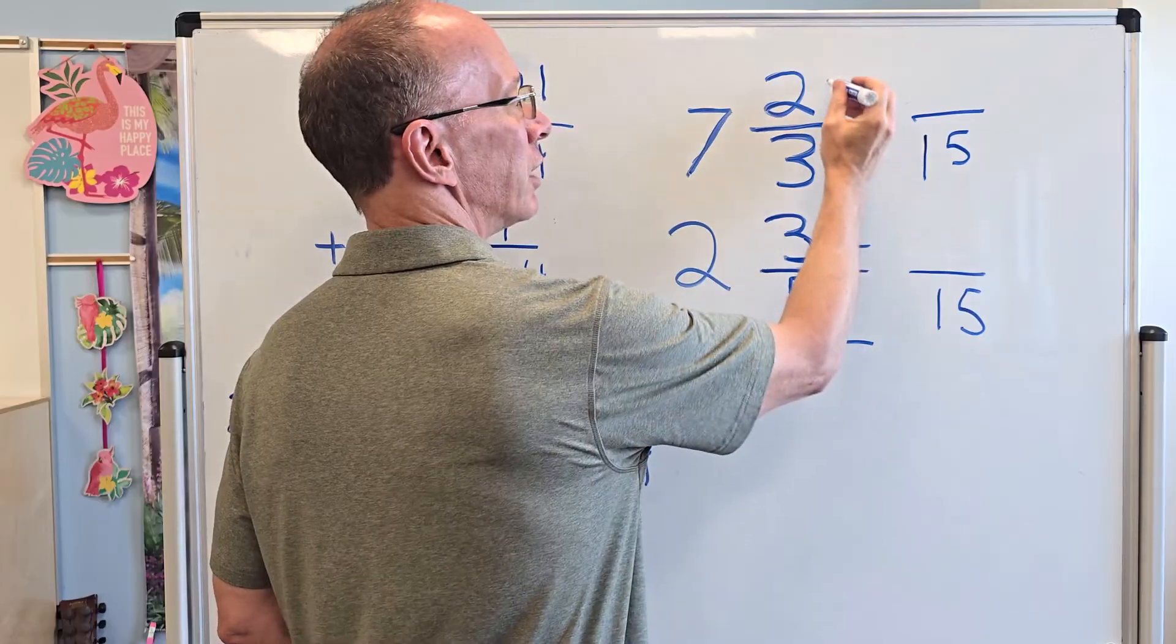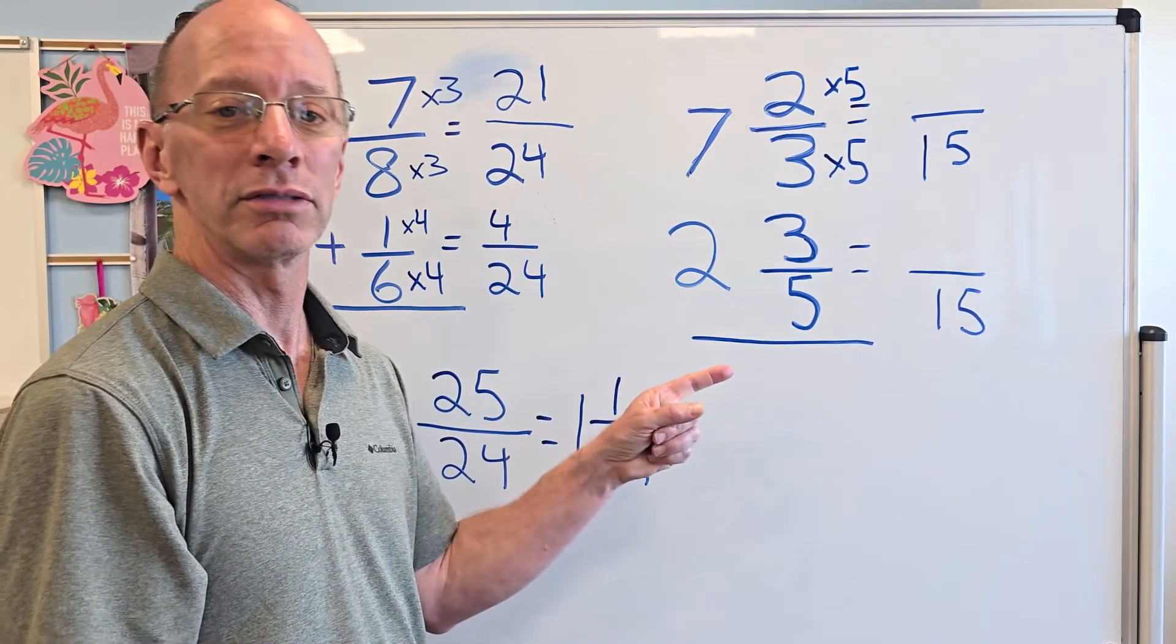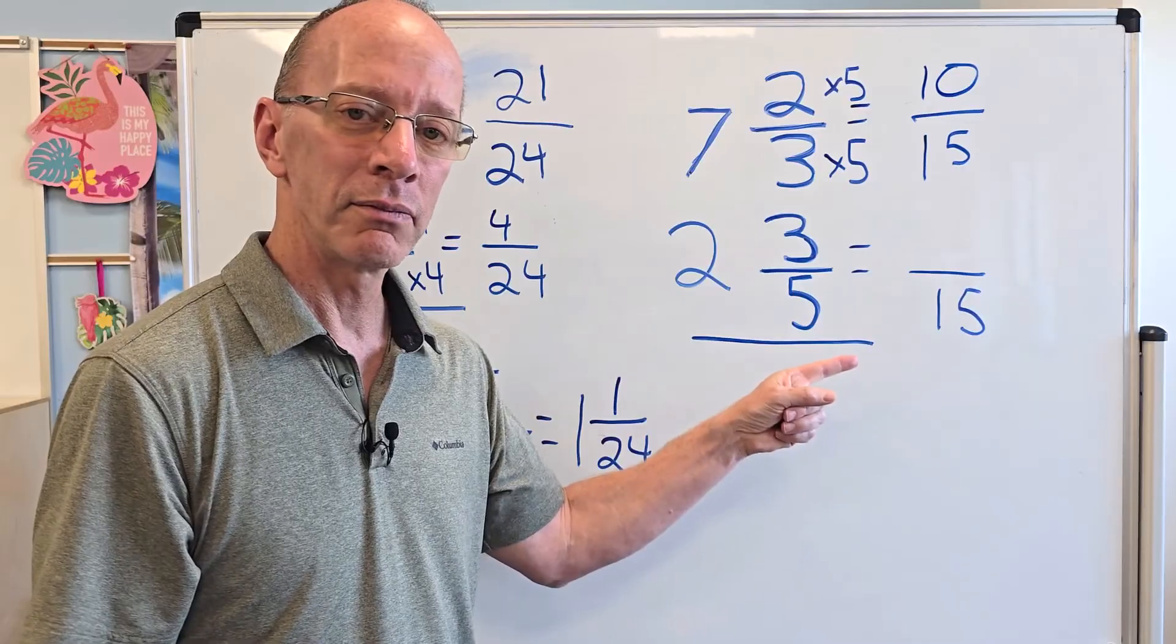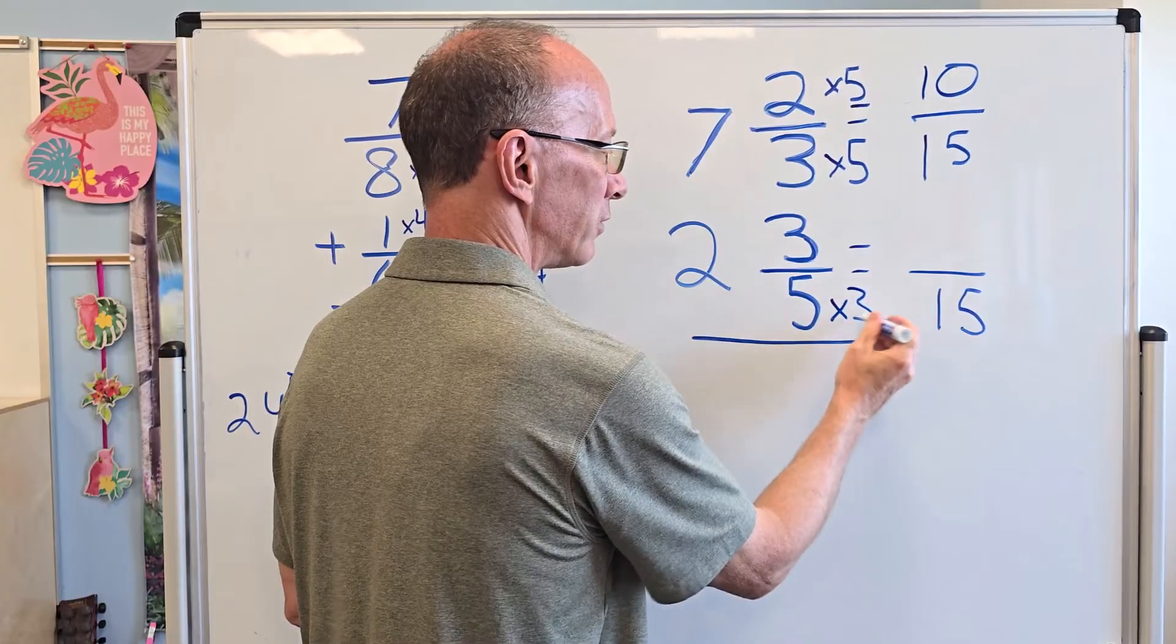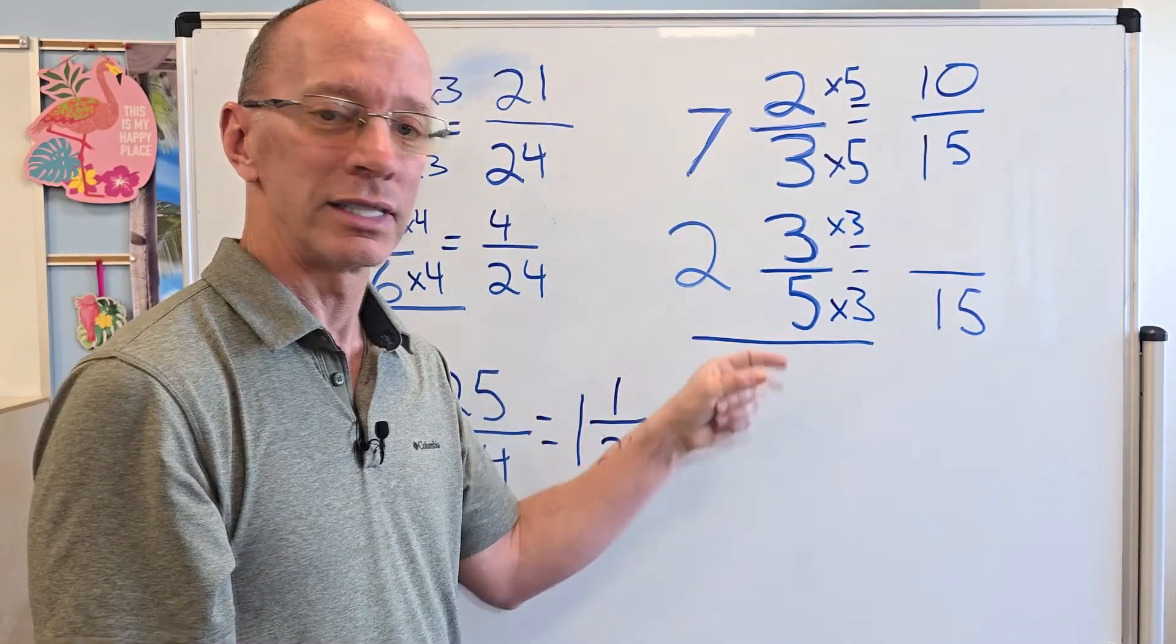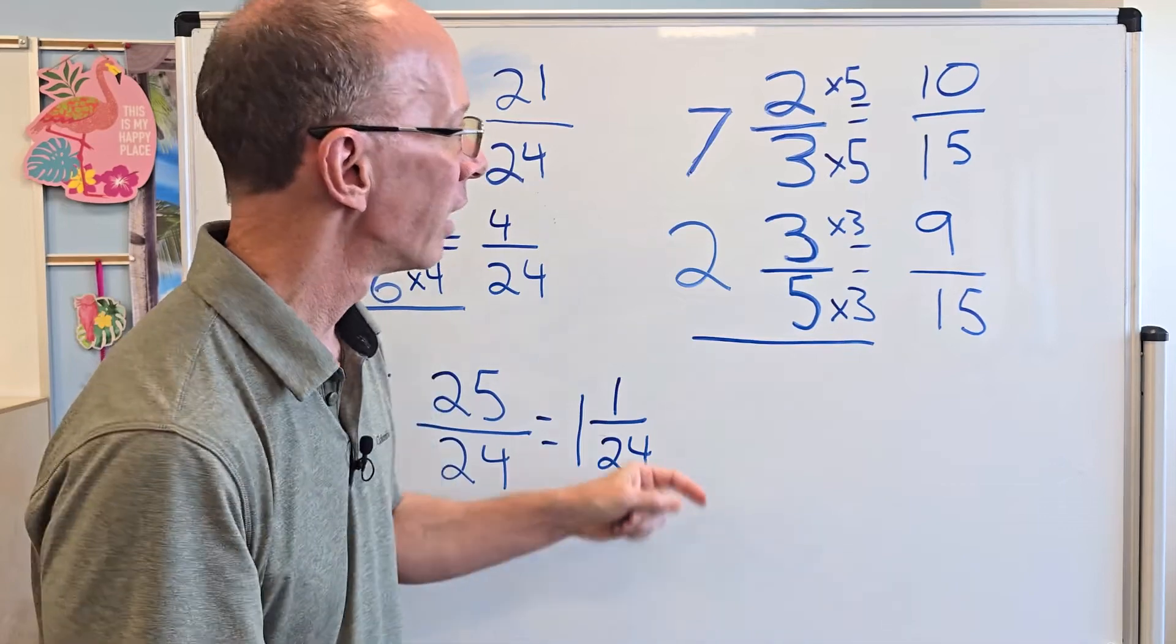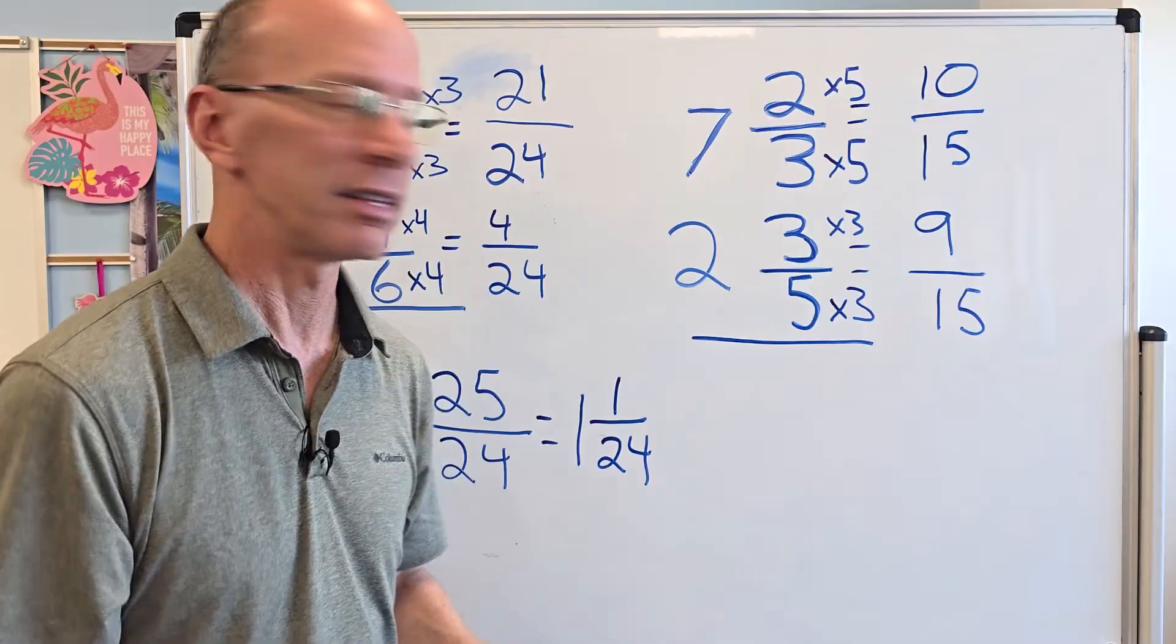What times 3 equals 15? 5. Yeah. You guys are so smart. Math ninjas. 3 times 5 equals 15. And then whatever I do here, I have to do up here. Times 5. So 2 times 5 equals 10. So let's go ahead and put 10 right there. Again, 5 times what equals 15? 3. So I'm going to take 5 times 3 equals 15. And then I have to write that up here. 3 times 3 equals 9. And that's it. Now we have the denominators the same.